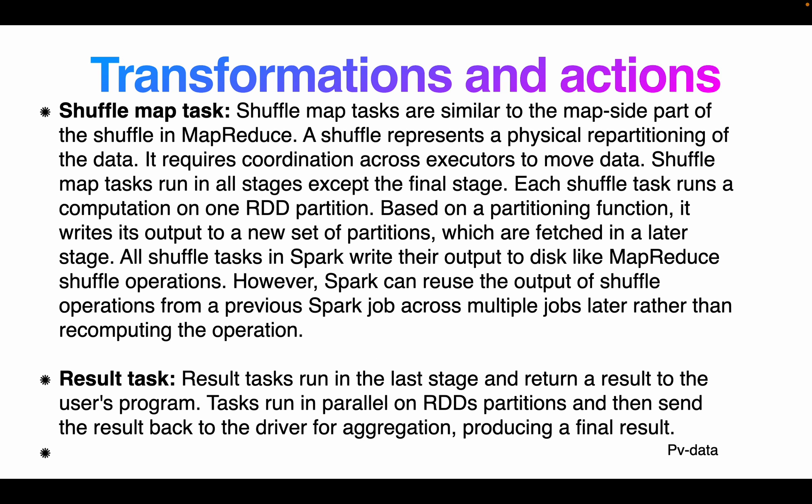Shuffle map tasks are similar to the map-side part of the shuffle in MapReduce. A shuffle represents the physical repartitioning of data and requires coordination across executors to move data. Shuffle map tasks run in all stages except the final stage. Each shuffle task runs a basic computation on an RDD partition based on a partition function, and writes its output to a new set of partitions used by the next stage. All shuffle tasks in Spark write their output to disk, similar to MapReduce.